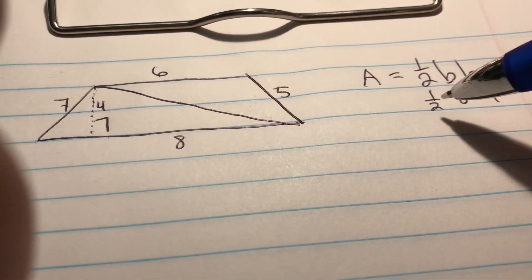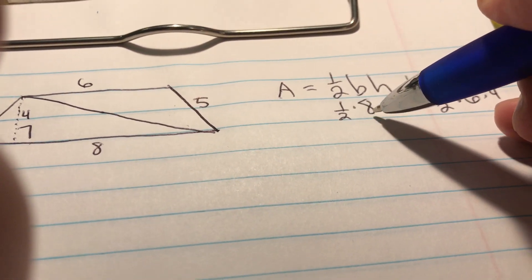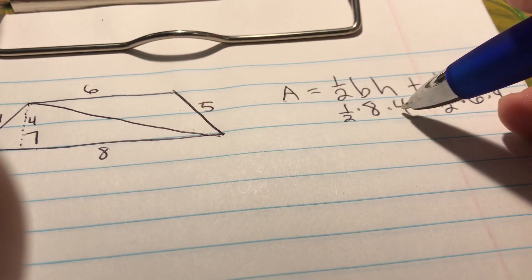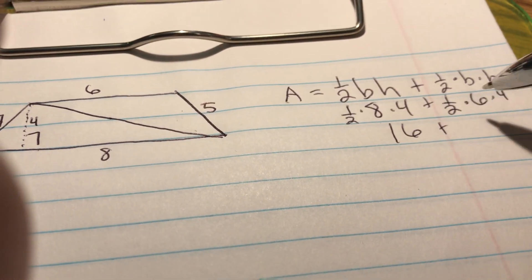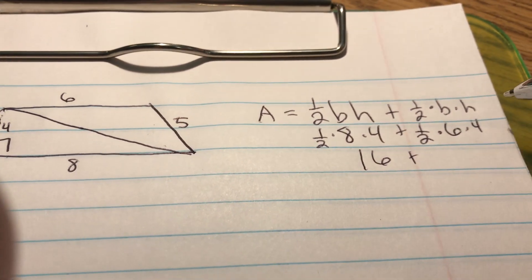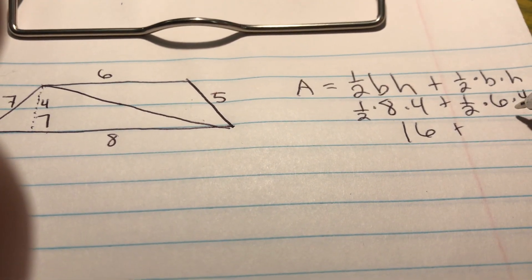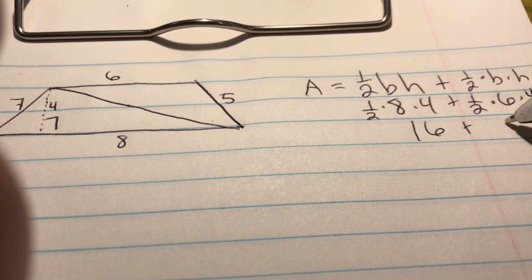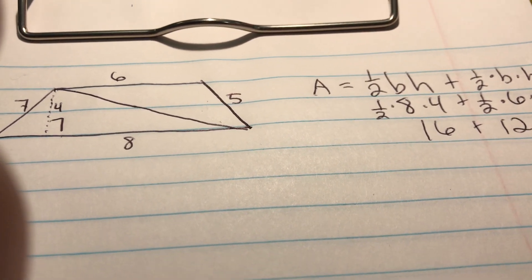All we have to do now is find the area of the two triangles and just add them together. Half of 8 is 4, and then 4 times 4 is 16. Half of 6 is 3, and then 3 times 4. Say half of 6 is 3, and 3 times 4 is 12. Sorry.